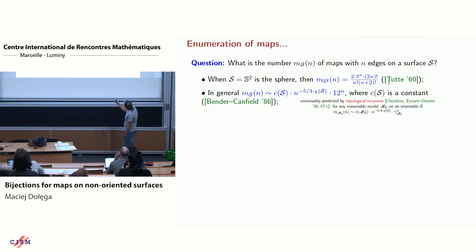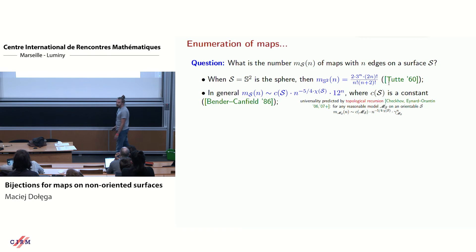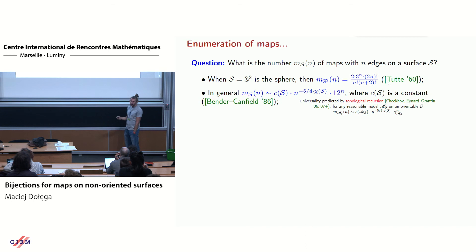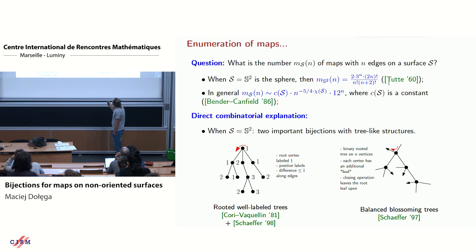If your surface is orientable, this is a kind of universal pattern — you can observe it using topological recursion — and this behavior is very common for many models. But the result of Bender and Canfield works also for non-orientable maps; it actually doesn't depend on orientability. It's very interesting to find a direct explanation of this formula because the original proof was not so direct.